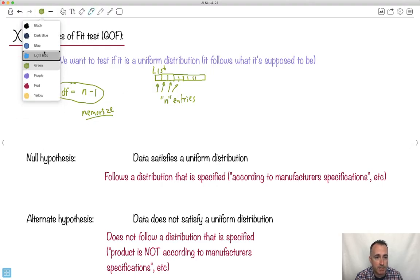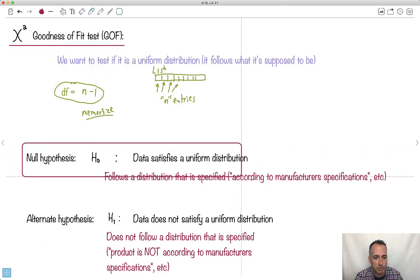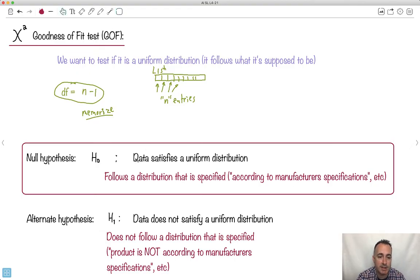We have a null hypothesis as well. H0 is going to be the null hypothesis, and the alternate hypothesis will be H1. The null hypothesis is that the data satisfies some kind of uniform distribution. But what does that mean? The way I like to think about it is, it's how it's supposed to be. You're going to check, are these two things the same? Or if you're rolling a die, is it a fair die? Or if we're looking at manufacturer's things, it follows the manufacturer's specifications. That's the way to state it. And H1 is the opposite, it does not satisfy, does not go according to the specifications.